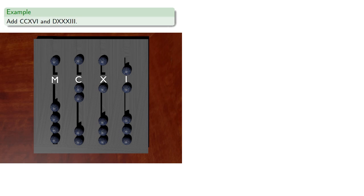Now to add, we'll set down our summands. So we've already set down CCXVI, and we want to add DXXXII. So we'll add a D, three X's, and three I's.